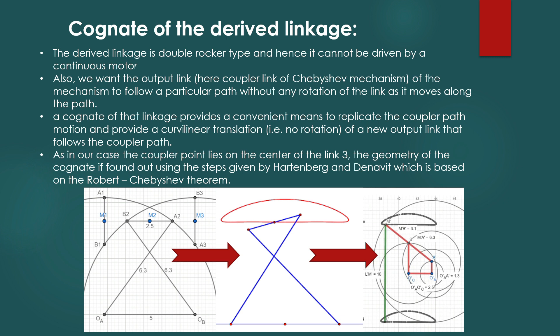This can be done if we take a cognate form of the above derived mechanism. Once an appropriate path motion of coupler curve and its four-bar linkage have been found, a cognate of that linkage provides a convenient means to replicate the coupler path motion and provide a curvilinear translation of a new output link that follows the coupler path.